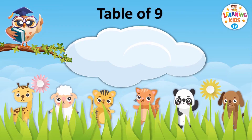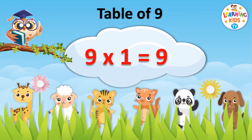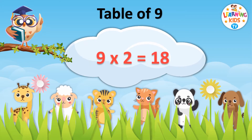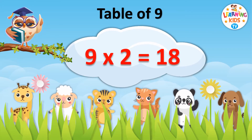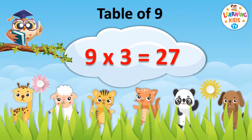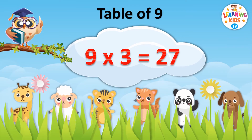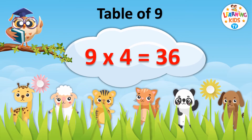Nine ones are nine. Nine twos are eighteen. Nine threes are twenty-seven. Nine fours are thirty-six.